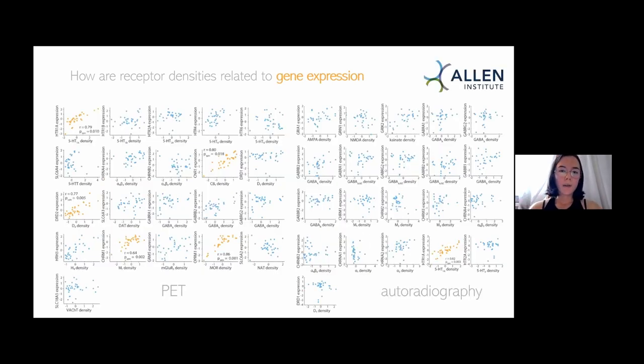The final thing I want to show you is this relationship with gene expression. Now, this is a really overwhelming slide, and that's kind of on purpose. What I'm showing here is the correlation between the gene that is corresponding to each receptor. For most metabotropic receptors, there's one gene that codes for the whole receptor, but for ionotropic receptors, it gets a bit more complicated. I'm not showing all the subunits, but we do the analysis for all the subunits.